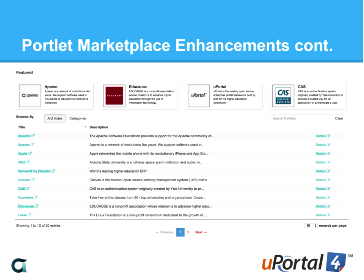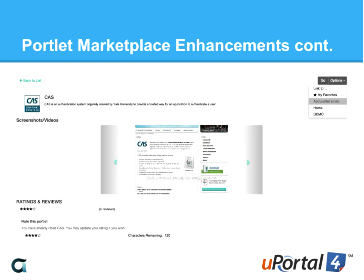Here is the list view screen of the marketplace updated in uPortal 4.2 — it's very Bootstrap-based and responsive. The sections at the top do cool things with wrapping as the display gets narrower, and the table in the middle loses columns that are too wide as the page narrows. On the detail screen there's more use of images, and the best new thing in the marketplace in 4.2 is the ability to add a portlet to your tab-column layout directly via an options dropdown in the top right.